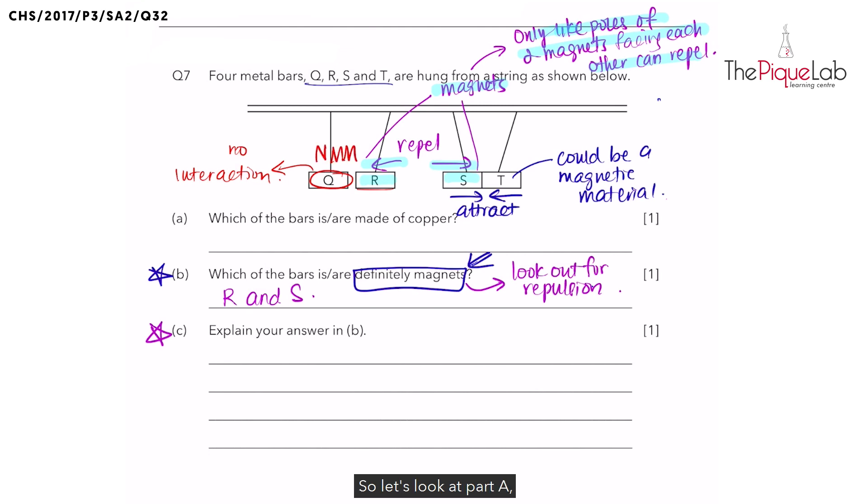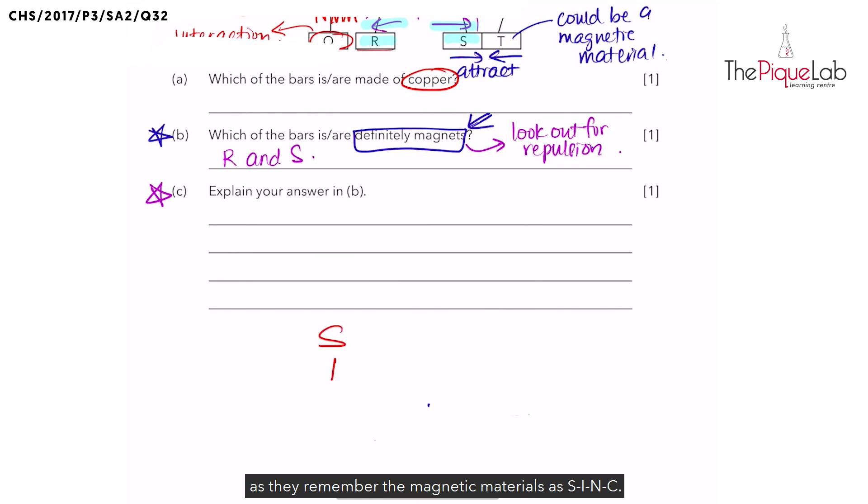So let's look at part A. Which of the bars is or are made of copper? Let's think about this. Copper, is it a magnetic or non-magnetic material? Some students tend to get confused with this as they remember the magnetic materials as S, I, N, C. And what does S, I, N, C stand for? S stands for steel, I stands for iron, N stands for nickel. And C, what does C stand for? Is it copper? No, it's not copper. It's actually cobalt, not copper.